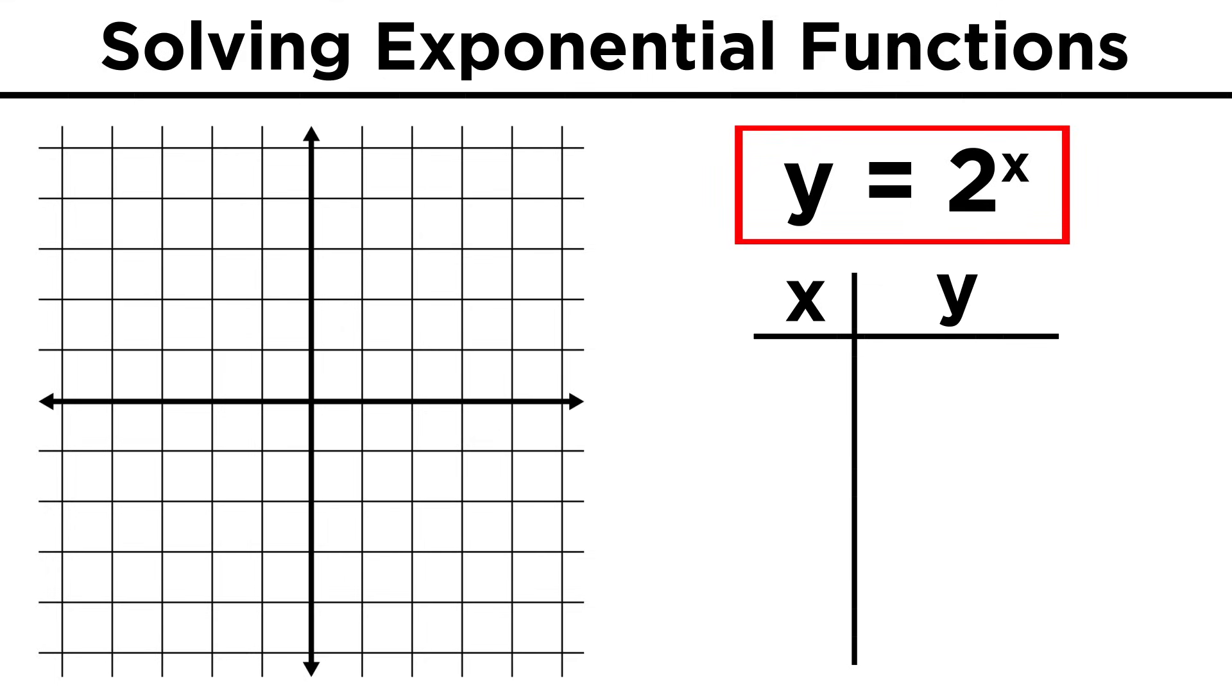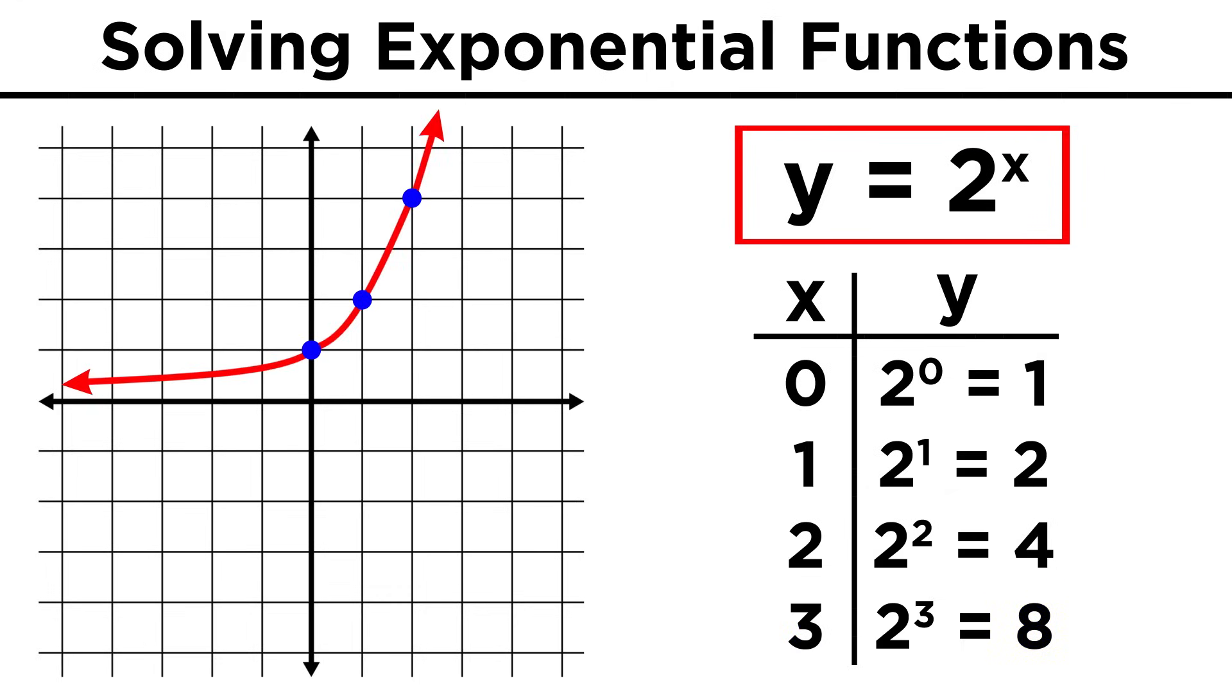To see what these do, let's plot a few points. When x is zero, y is one, because anything to the zero power is equal to one, which we learned when we went over the rules of exponents. When x is one, y is two, because two to the one is two. When x is two, y is four, because two squared is four. When x is three, y is eight, and so forth. As we can see, the function grows very rapidly as x increases.